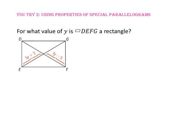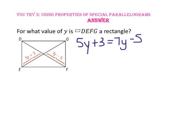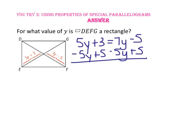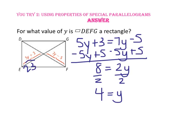Pause the video and do you-try number 2. For what value of y is parallelogram DEFG a rectangle? Since the diagonals of a rectangle are congruent and bisect each other, we set 5y + 3 = 7y − 5. Subtracting 5y from both sides and adding 5 gives 8 = 2y, so y = 4. Checking: 5(4) + 3 = 23 and 7(4) − 5 = 23. ✓